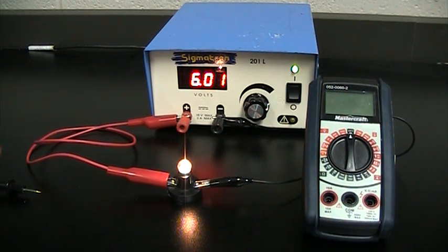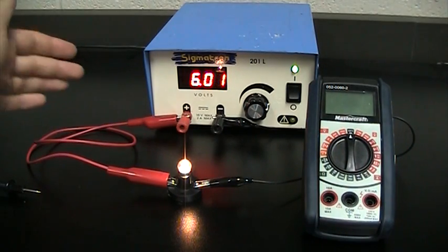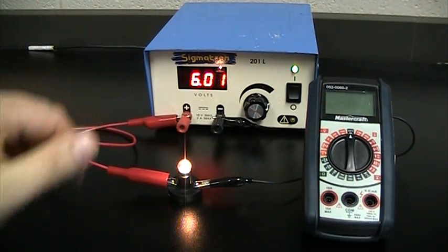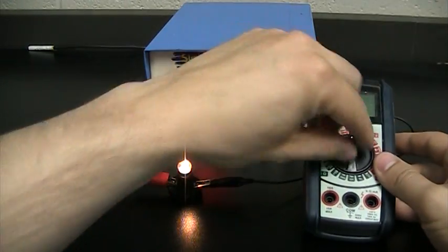Before we can do this we need a basic simplest circuit of one bulb and one power source along with a couple leads connecting them together and we need a digital multimeter.